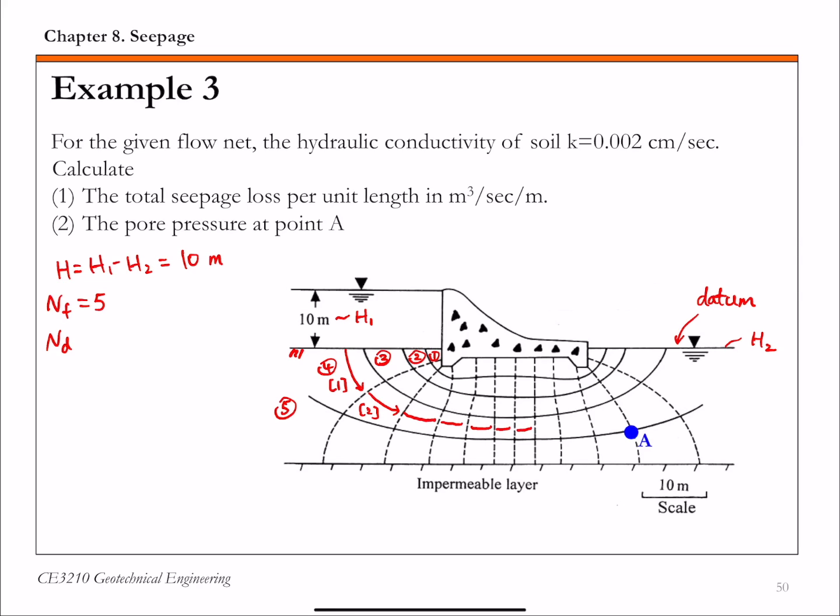8, 9, 10, 11, and 12. So there are a total of 12 potential drops from upstream to downstream.